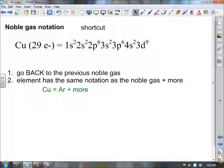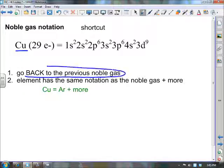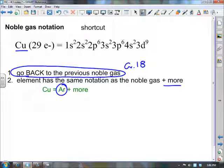So here's how we do the shortcut. It's real simple. We identified copper as the element we're writing. We go back to the previous noble gas that comes right before us, so the element in group 18. Once we go back to the element in group 18, copper has exactly the same notation as that noble gas, because this noble gas came before copper. So copper has what the noble gas has plus a few more electrons.